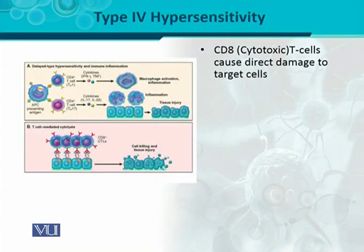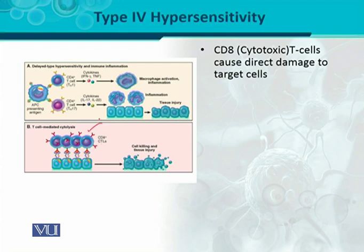In type 4 hypersensitivity, two important kinds of T-lymphocytes are involved. The first is cytotoxic T cells, which are CD8-positive cells — CD8 being a surface molecule. These cells cause direct damage to the cell. If a cell is infected or transformed, CD8 cells engage in direct cell-to-cell interaction. Antigen-presenting cells present the antigen via class 1 MHC to cytotoxic T-lymphocytes (CTLs), which are CD8-positive T-lymphocytes.